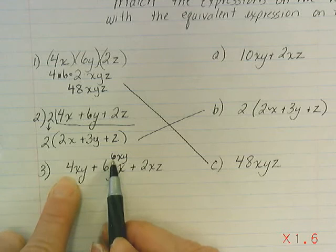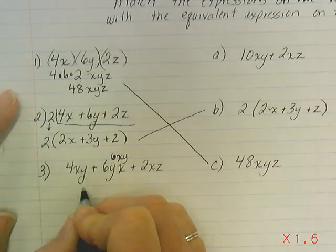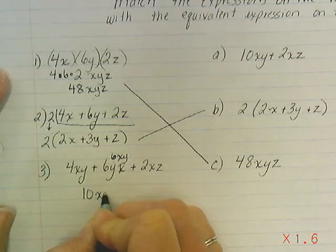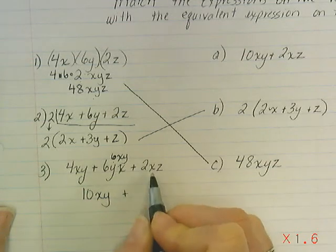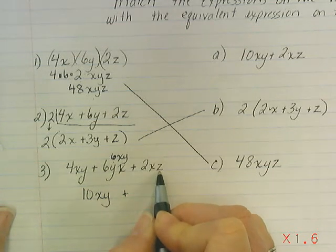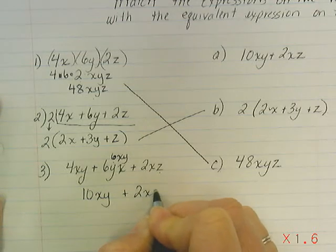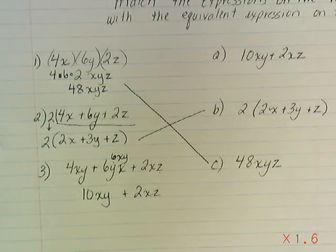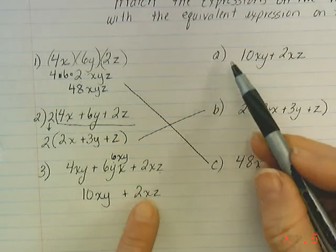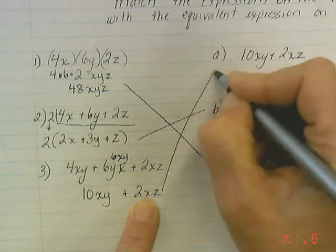Now I can add those coefficients. 4 plus 6 gives us 10xy. And this 2xz does not have the same variables as the xy terms, so I can't combine them. We have to leave it separately: 10xy plus 2xz. Now these two look the same, and I can match this up with A.